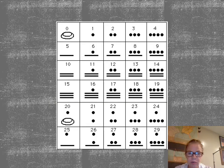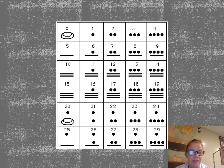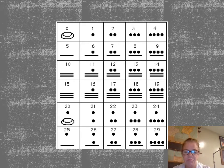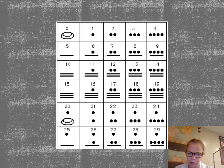Here is their writing system. Notice they have the number zero, which was very advanced. One dot equals one, two dots equals two, and when you get to five it shifts to a line, then a line and a dot is six, and two lines is ten. It just goes on like that, and in some ways it's a lot like Roman numerals.